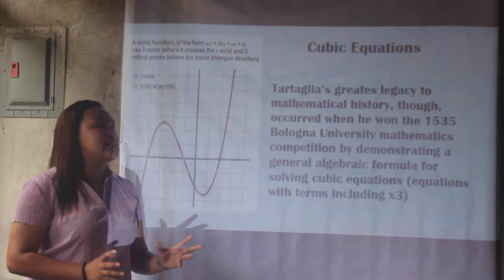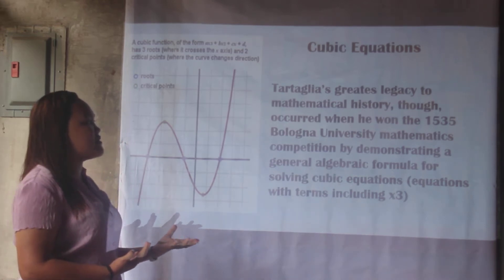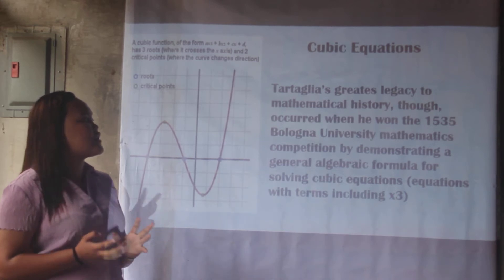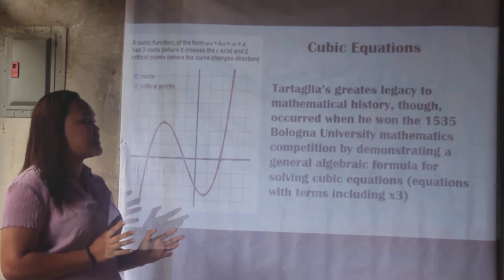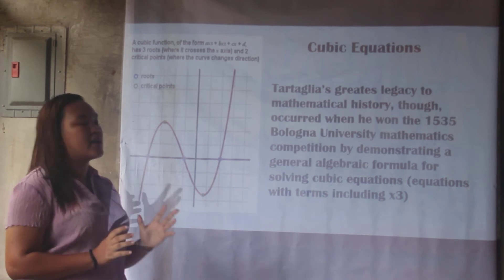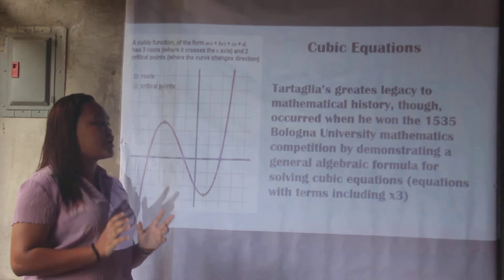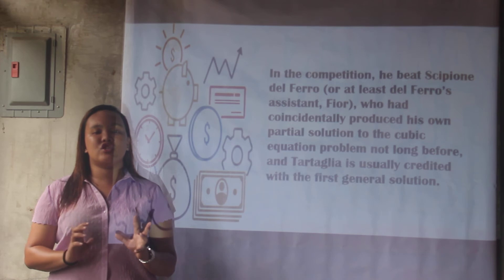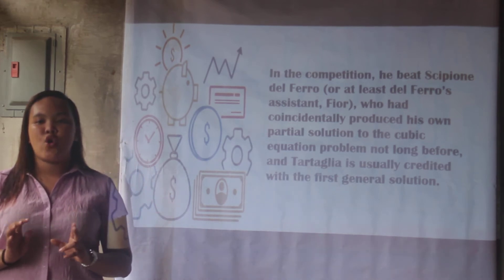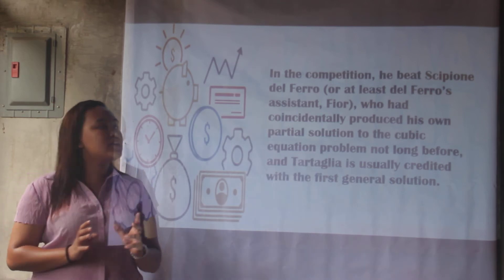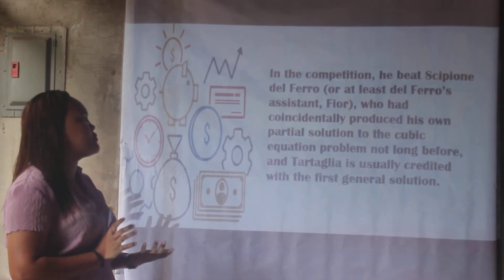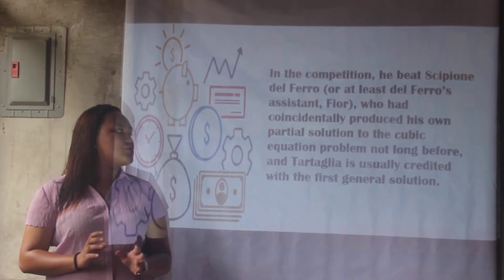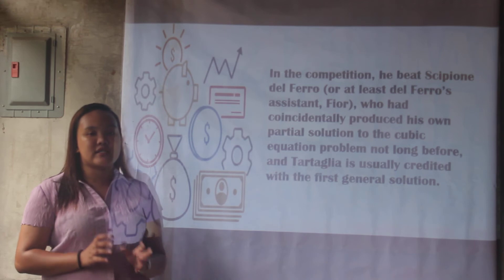Tartaglia's greatest legacy to mathematical history occurred when he won the 1535 Bologna University Mathematics Competition by demonstrating a general algebraic formula for solving cubic equations. In the competition, he beat Scipione del Ferro — or at least del Ferro's assistant — who had coincidentally produced his own partial solution to the cubic equation problem not long before. Tartaglia is usually credited with the first general solution.